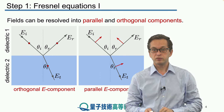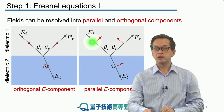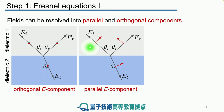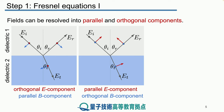The E field can also be resolved into the parallel component — parallel meaning parallel with the screen, represented by these arrows right here. Accordingly, we also have the B field. If the E field is coming out of the screen, orthogonal to the screen, then the B field must be parallel to it, represented by these arrows. And in the case when the E field is parallel, then the B field must be orthogonal to the screen, meaning it's coming directly at us or into the screen. We will consider these two scenarios separately.